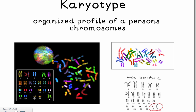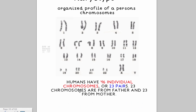Remember that we have 23 pairs of chromosomes, which will account up to 46 individual chromosomes. Remember also that one of these chromosomes comes from the mother and one of the chromosomes comes from the father.